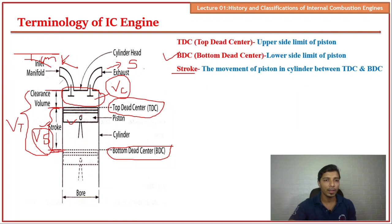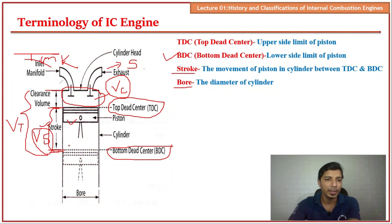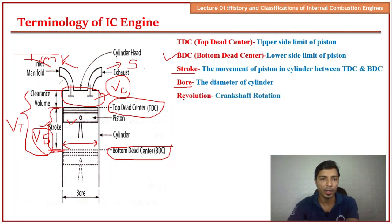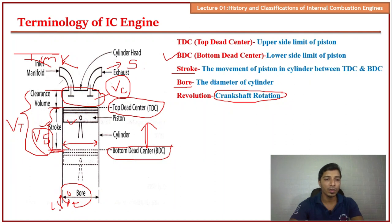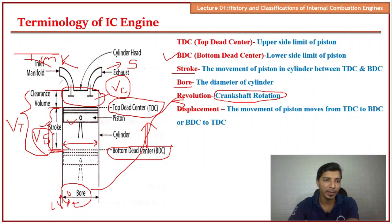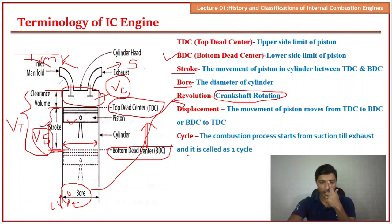Bore diameter is the diameter of the engine cylinder. Revolution is a simple term — it is the crankshaft rotation. When the piston moves down, the crankshaft rotates 180 degrees; when the piston moves up again, the crankshaft rotates another 180 degrees, completing one full revolution. Displacement is related to stroke — it is the displacement volume, which is the volume swept by the engine as the piston moves from TDC to BDC.